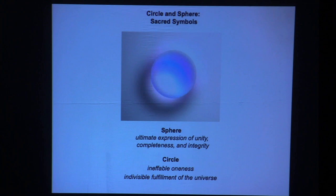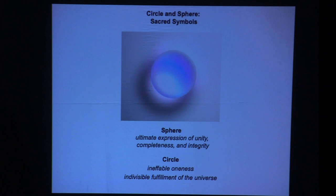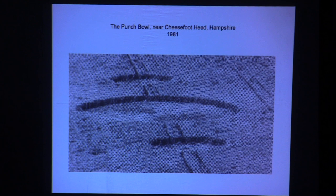Let's consider what circles and spheres mean, because there is such a thing called sacred geometry. Over the ages, people consider circles, as simple as they are, to have great profound meaning. The ultimate expression of unity, completeness, and integrity is a sphere. A circle is a two-dimensional representation of a sphere — ineffable oneness, indivisible fulfillment of the universe. Think about that when you see a circle. It could be a lot more.